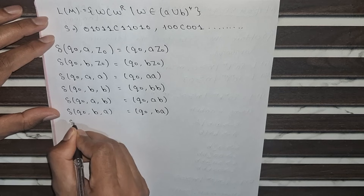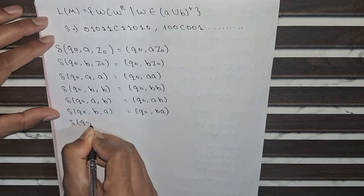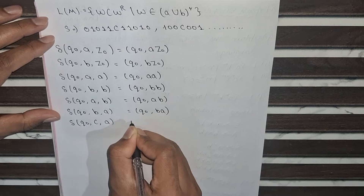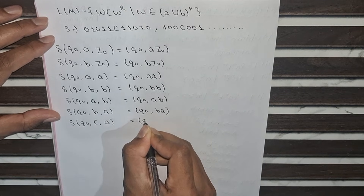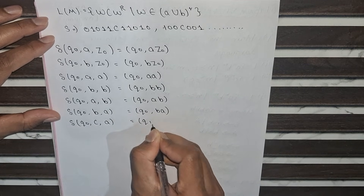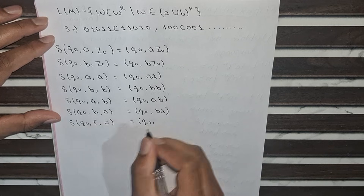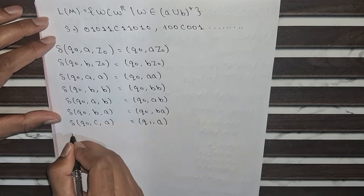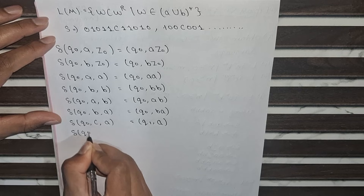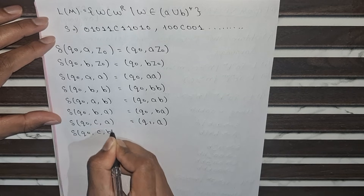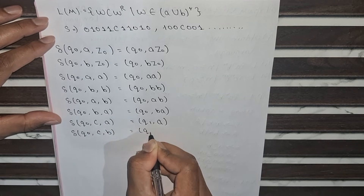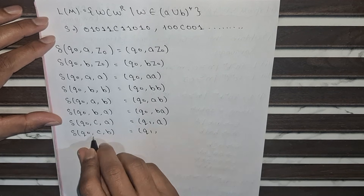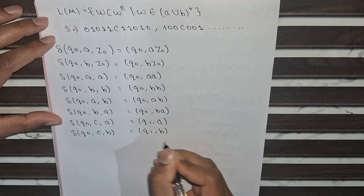When C is encountered and the top of the stack is A, we change the transition state from Q0 to Q1 and pop C from the stack, leaving only A. Similarly when C is encountered and the top of the stack is B, we change the transition from Q0 to Q1 and pop, leaving only B on the stack.